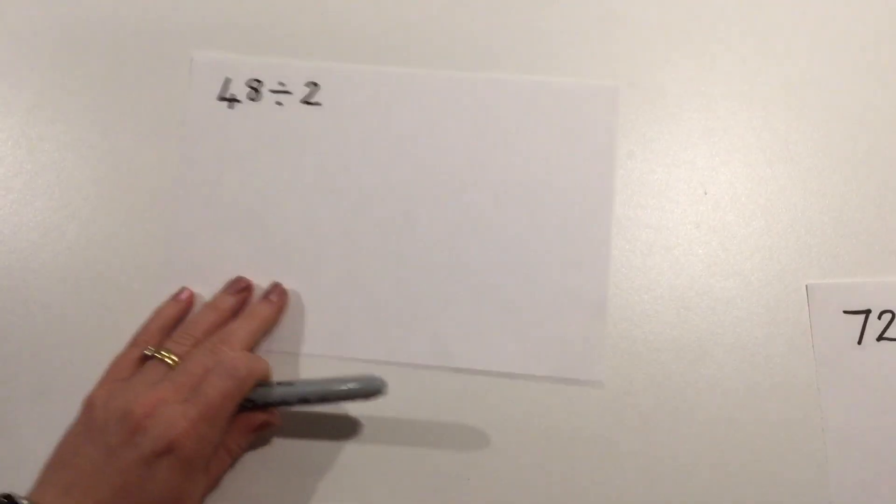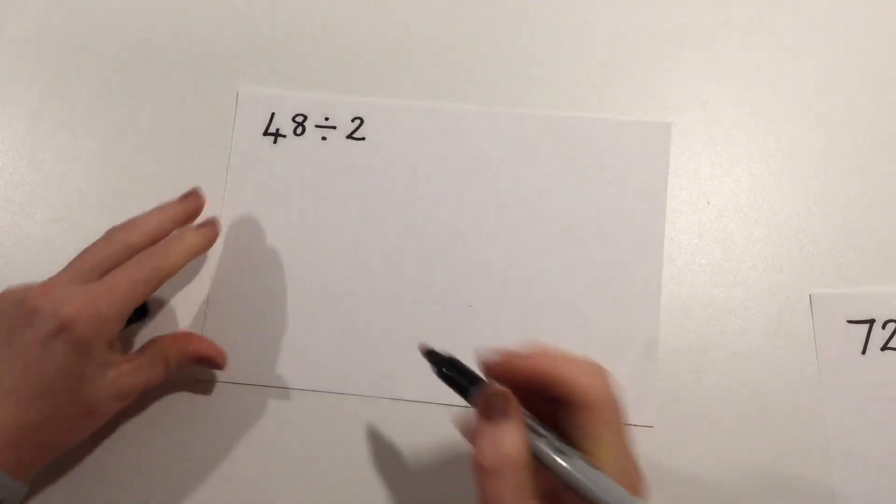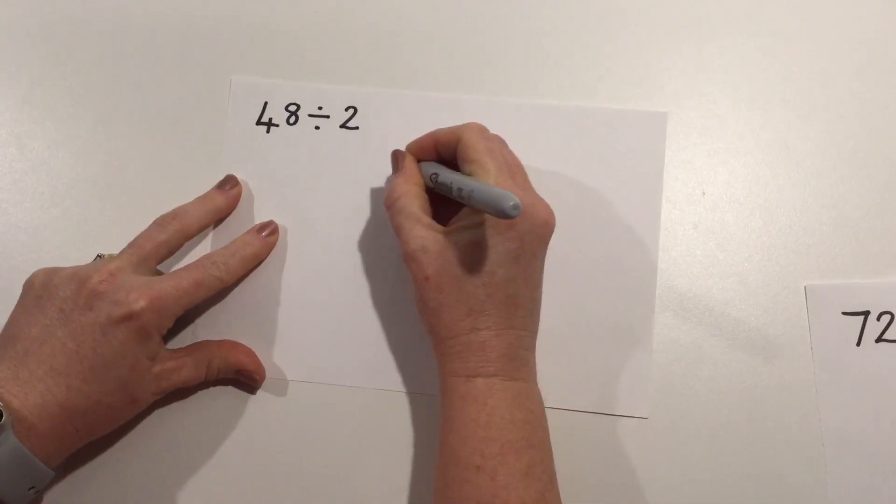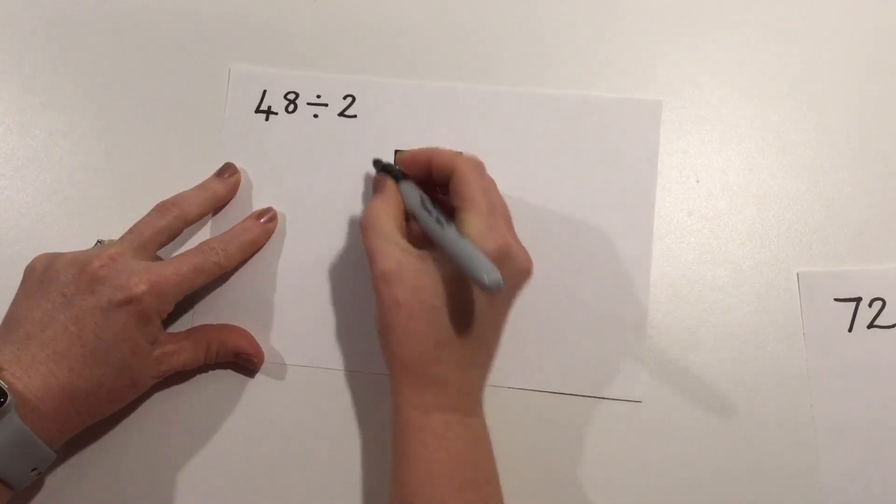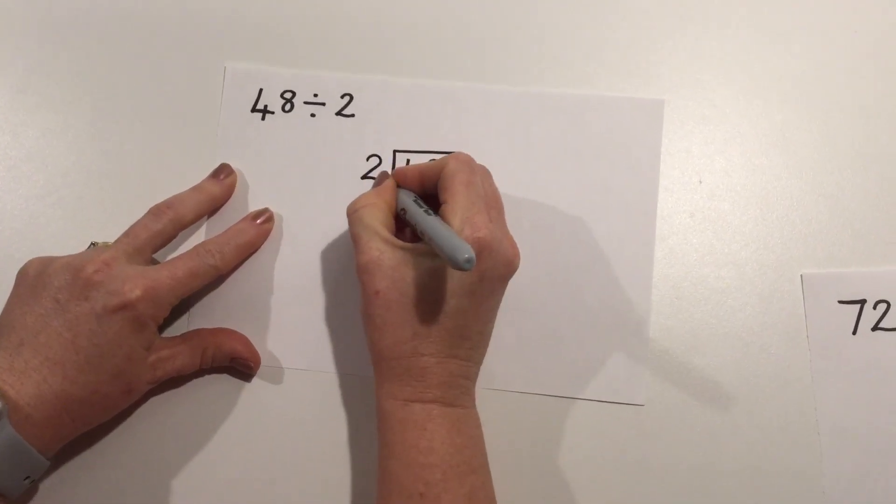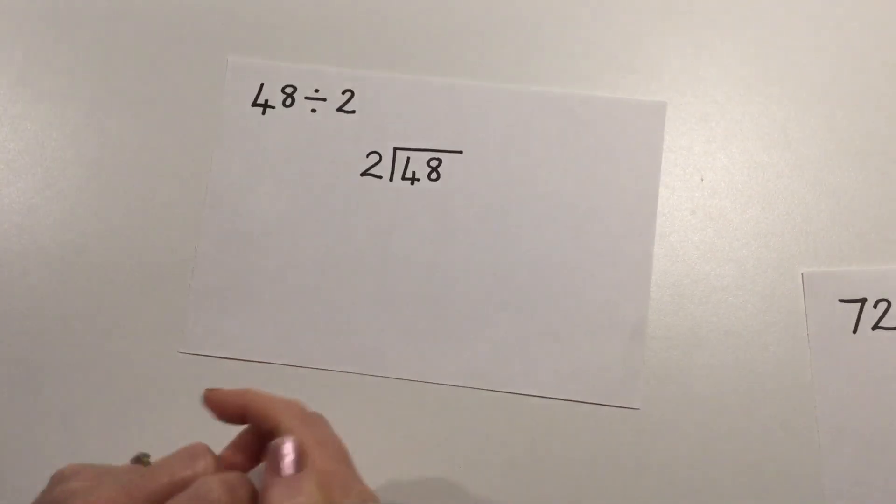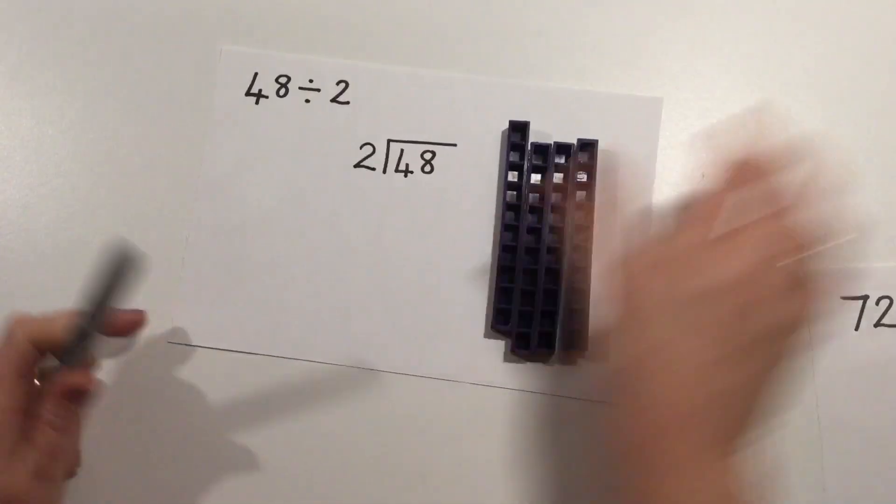The first example we're going to look at is 48 divided by 2. Now if we put that into our bus stop, 48 is what we're dividing up and we're putting 48 into groups of 2. So I'm just going to get my 48 counters.